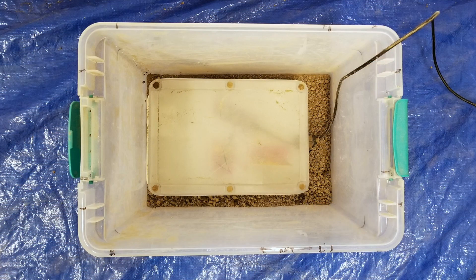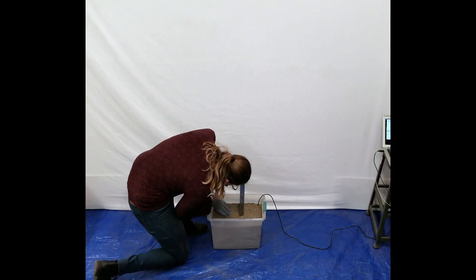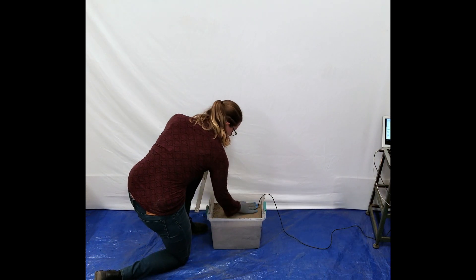For our demo, we place the tag in a bin and cover it with silty loam soil. Next, we measure the depth of the tag and level off the surface of the soil.